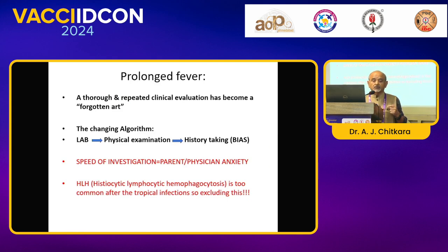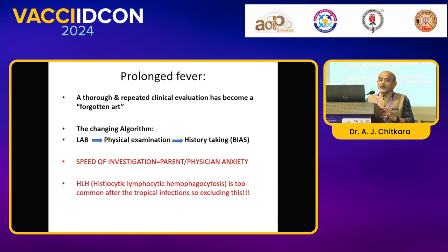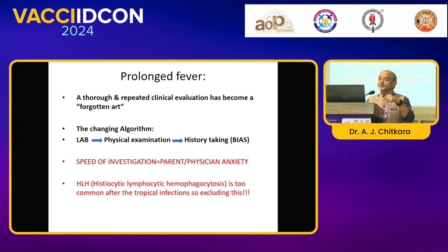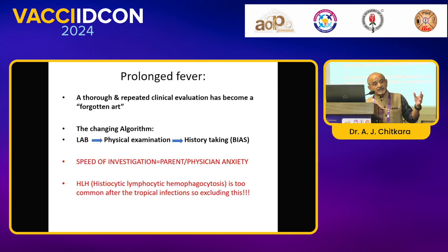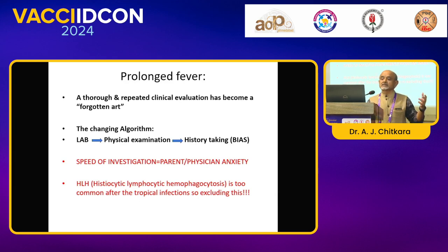Once this patient comes back to you, clinical evaluation has gone for a toss — it's a forgotten part. The new algorithm is: you see the lab test, do sometimes a relevant physical examination which is optional, and then take a history that correlates with your lab, rather than correlating lab with clinical evaluation. When this algorithm changes, poor Baba Hutchinson must be turning in his grave. Speed of investigation always depends on parental or doctor anxiety, rather than the disease dictating what is to be done.